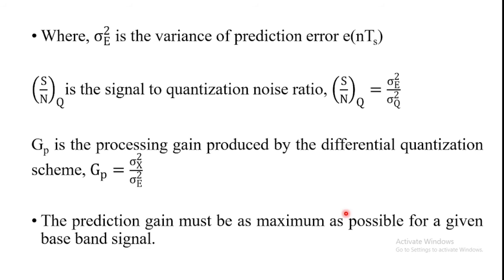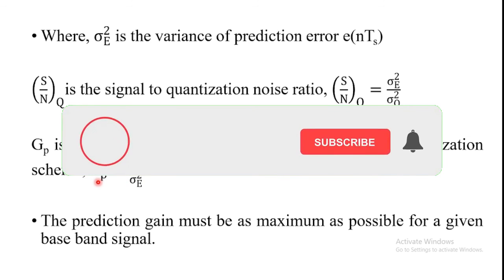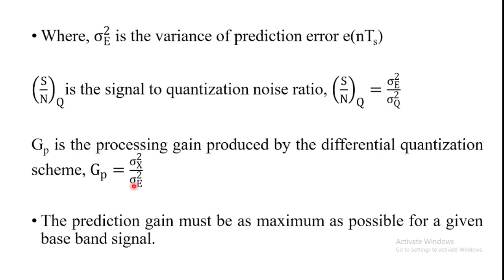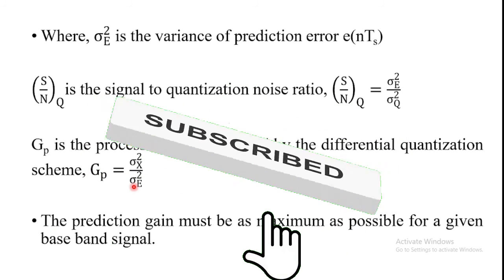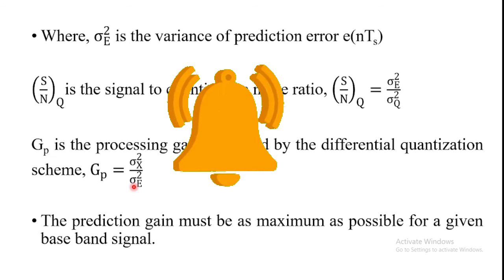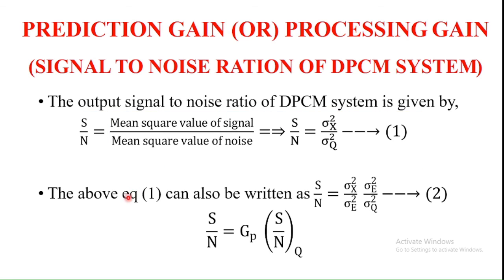The variance sigma x square is fixed. Hence, to maximize the processing gain, we have to minimize sigma e square — the variance of the prediction error. The predictor must be designed accordingly. This is the concept of the processing gain or prediction gain, which is also the signal to noise ratio of the DPCM system.